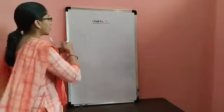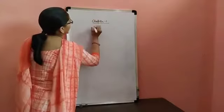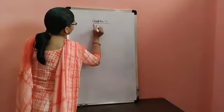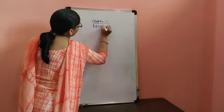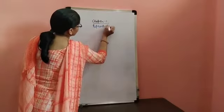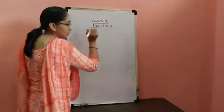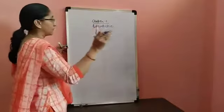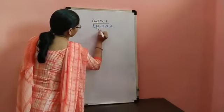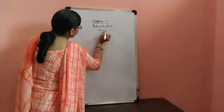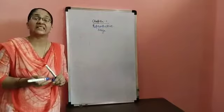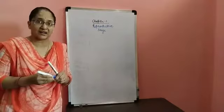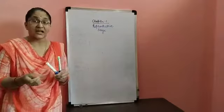Here we are going to talk about the reproductive stage in detail. When we talk about this stage of the life cycle of an individual — that is the reproductive stage — it is the stage where the individual attains reproductive maturity.